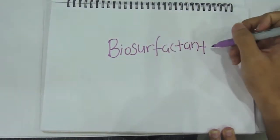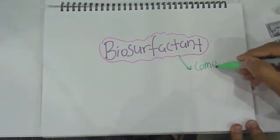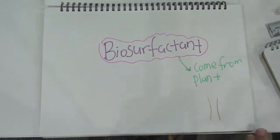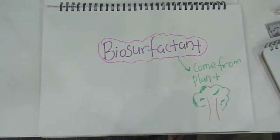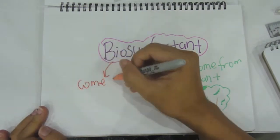The natural surfactant, called biosurfactant, which is made from plants and animals, can enhance the emulsification of hydrocarbon.